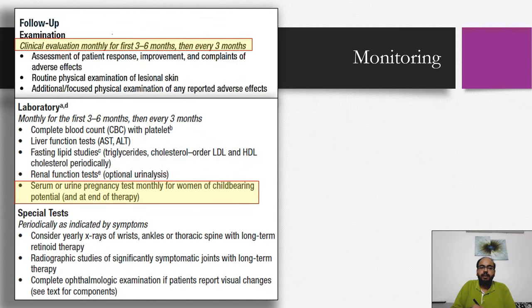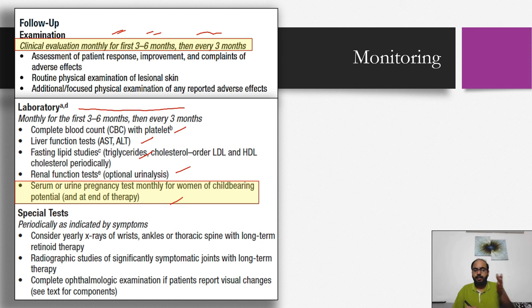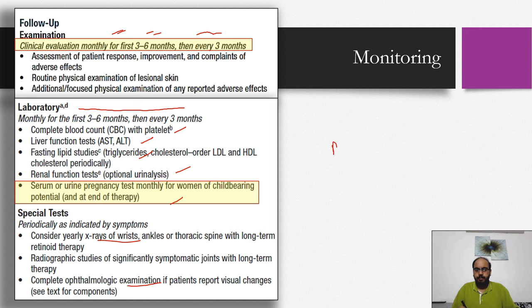On follow-up: clinical evaluation monthly for the first three to six months, then every three months — assessing improvement, adjusting doses, doing physical examination, and asking about mood disorders. Lab investigations — CBC, LFTs, lipid profile, KFTs, and serum or urine pregnancy tests — monthly for the first three to six months, then every three months. X-rays if any pain, ophthalmic examination for any eye complaints. Remember: monthly for three to six months, then three-monthly.